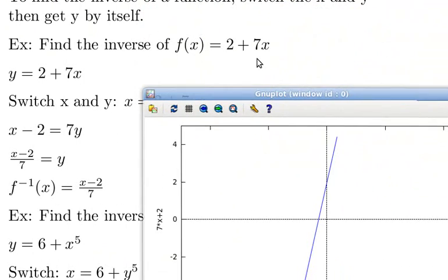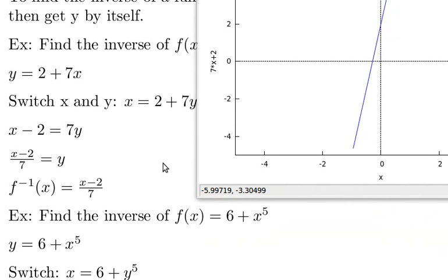2 + 7x is the original. The inverse is going to be (x - 2)/7. They're both lines, of course. But what exactly did we do?